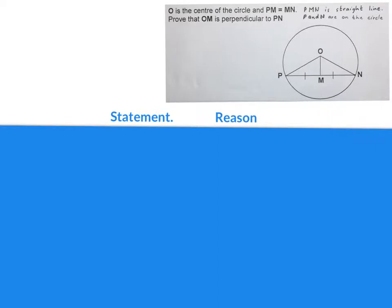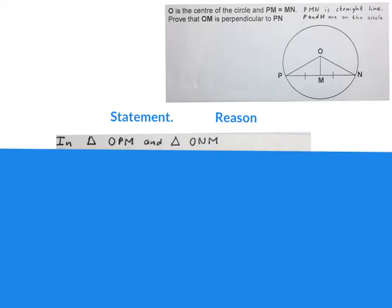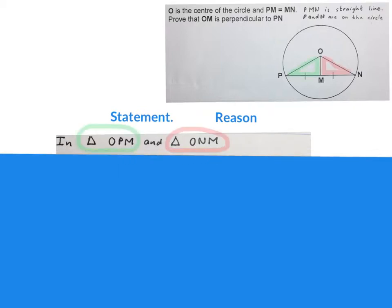Please remember when we answer riders we must write a statement and give a reason why we're saying so. Here we will say: in triangle OPM and triangle ONM — that will be the green triangle and the red triangle — we will prove them congruent.